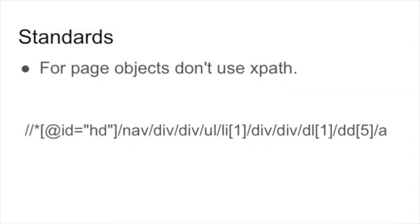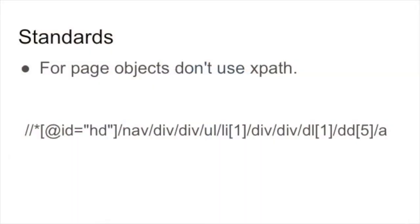For page objects, we avoid XPath — not because all XPath is bad, but when your XPath looks like a long unreadable string, you don't want to spend time on that. If we can't locate an element with a class, ID, or simple parent/child relationship, we need a developer to do some work. Our dev and QA teams agreed on this standard together.